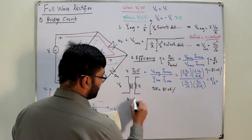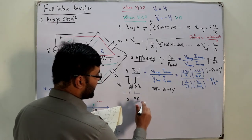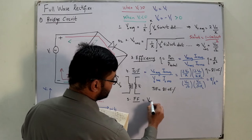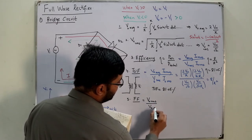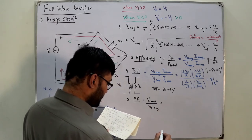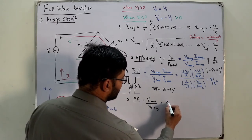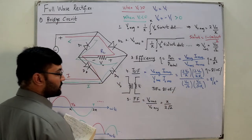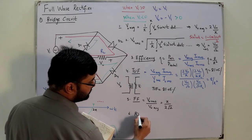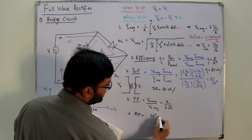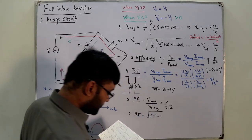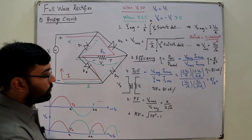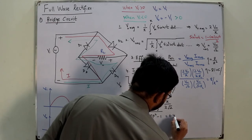Number five is the form factor, defined as: FF = V₀_rms / V₀_avg. Substituting the values gives FF = (Vm/√2) / (2Vm/π) = π/(2√2). Number six is the ripple factor, calculated as: RF = √(FF² − 1) = 0.48.